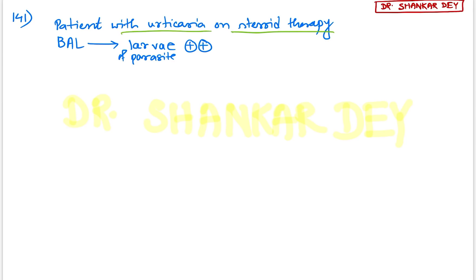Question 141: A patient with pruritic area on steroid therapy. Bronchoalveolar lavage is showing larval parasite. This is a very typical question — pruritic area, steroid therapy, lung involvement, and BAL showing intact larval parasite. This is nothing but Strongyloides stercoralis infection.